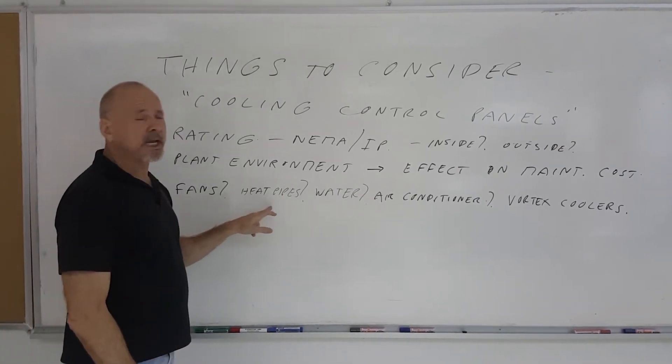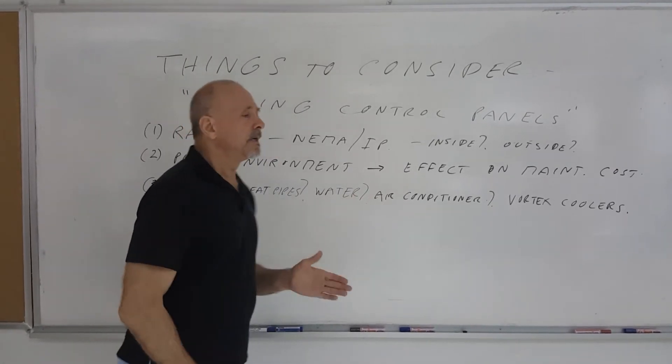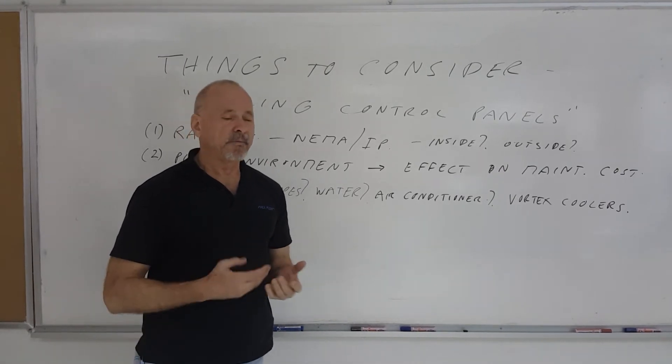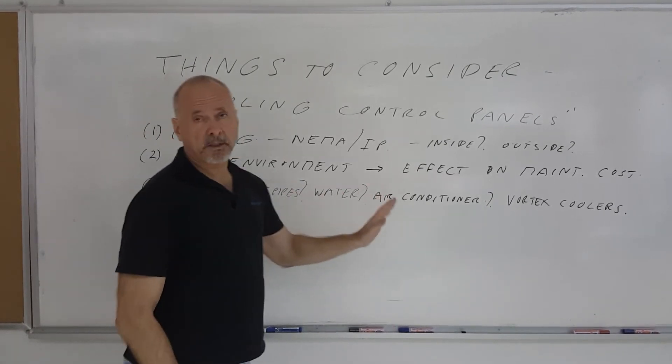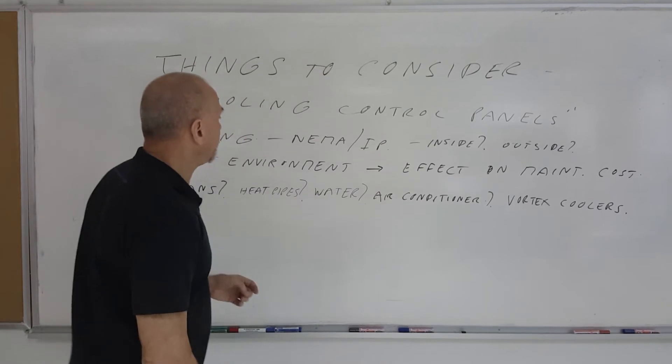Heat pipes are a nice way to take heat from the inside of a panel out. But heat pipes cannot reduce the temperature to below what the ambient is. If the ambient temperature in the factory is very high, you're better off to go to an air conditioning or a vortex cooler system to cool the control panel.